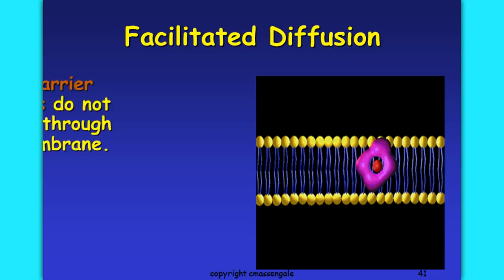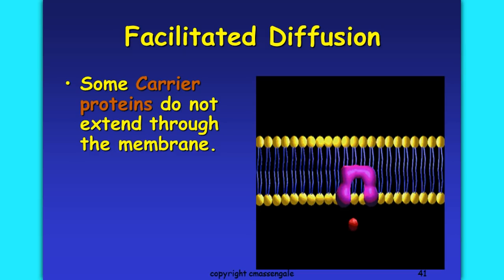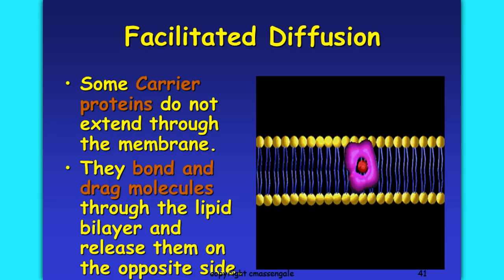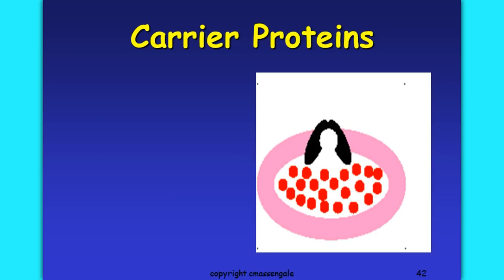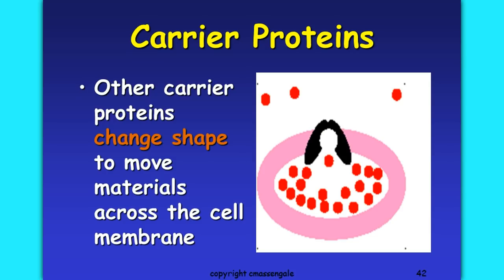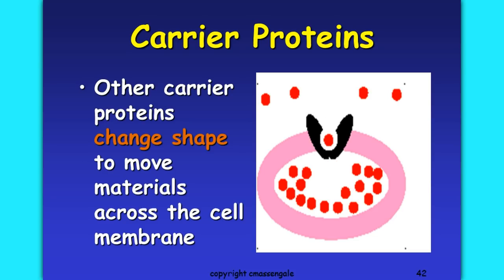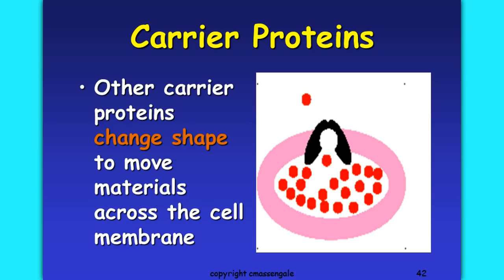Another way facilitated diffusion can work is that some carrier proteins don't go all the way through — they don't form a pathway from outside to inside. Some of them physically move, as shown in this video. They bond and then drag molecules through the lipid bilayer and release them on the opposite side. Carrier proteins change shape while still extending through the cell membrane, moving particles from the inside of the cell to the outside.